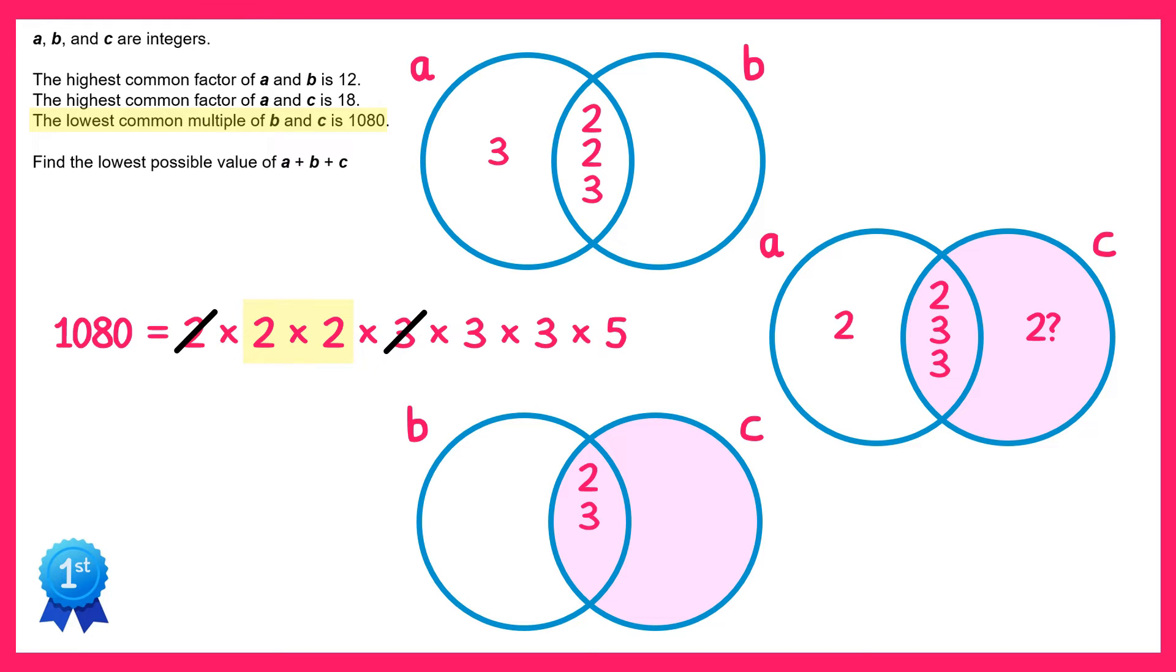Now this also causes us a problem because we have a 2 in the left section over here. You can't have an extra 2 in the left section and the right section, otherwise we have an extra factor of 2 in both A and C, in which case we need to place it in the middle. So we can't place another 2 in the C circle at all.